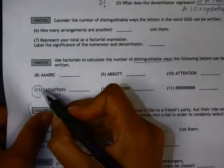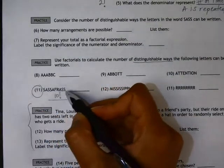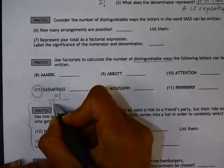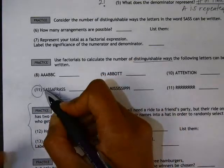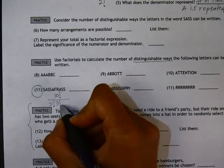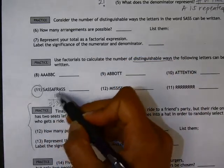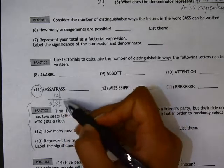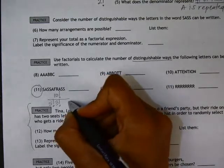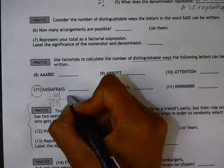And the denominator is going to represent the number of times each element is repeated factorial. So we have an S repeated 1, 2, 3, 4, 5 times. The A is repeated 1, 2, 3 times. And then F and R are not repeated, so you don't need to put 1 factorial and 1 factorial, since those would just be equal to 1.